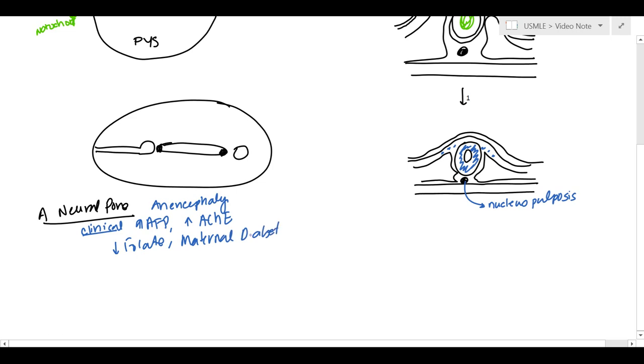Now, what can happen if, so that's the anterior pore, and what can happen if the posterior neural pore doesn't develop? Well, if the posterior neural pore doesn't develop, what can occur is they can just get, basically, spina bifida. And there's different types of that, spina bifida.